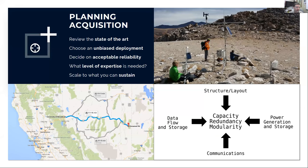A few planning acquisition items: I encourage people to review the state of the art, get involved in a community of people who have been doing this. For instance, the LTER group in our cluster — a lot of those folks have been doing this for a long time and are familiar with the state of the art, pushing the boundaries of new technology to make this stuff more accessible, interchangeable, easier to deploy, and more uniform. Choosing an unbiased deployment is very important — if you want to measure air temperature associated with the free atmosphere, put it on a mountain ridge, not down in a valley. And scale to what you can sustain.